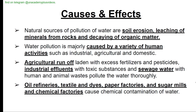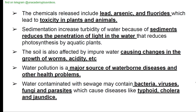Water pollution is majorly caused by human activities such as agricultural runoff laden with excess fertilizers and pesticides, industrial effluents with toxic substances, and sewage water with human and animal waste. Oil refineries, textile and dye factories, paper factories, sugar mills, and chemical factories cause chemical contamination. Chemicals released include lead, arsenic, and fluorides leading to toxicity. Sedimentation increases turbidity, reducing light penetration and photosynthesis by aquatic plants. Water contaminated with sewage may contain bacteria, viruses, fungi, and parasites causing diseases like typhoid, cholera, and jaundice.